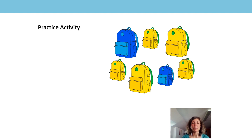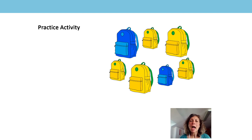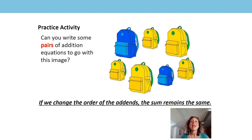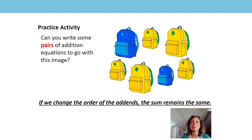I've got a practice activity for you now. You can do this after you've paused the video. Have a look at the picture. What can you see? I can see two blue bags and five yellow bags. What addition equation could you write for this picture? How many different ways can you write your addition equation? Can you remember our generalisation? If we change the order of the addends, the sum remains the same. If you're ready for a bit of a challenge, you might see more than one pair of addition equations in this picture. Well done for all your hard work today, everybody. Bye.